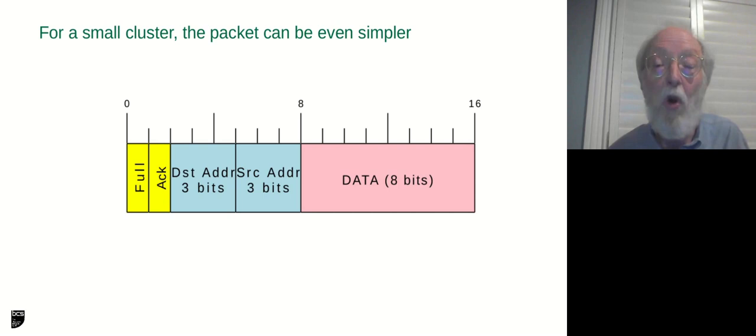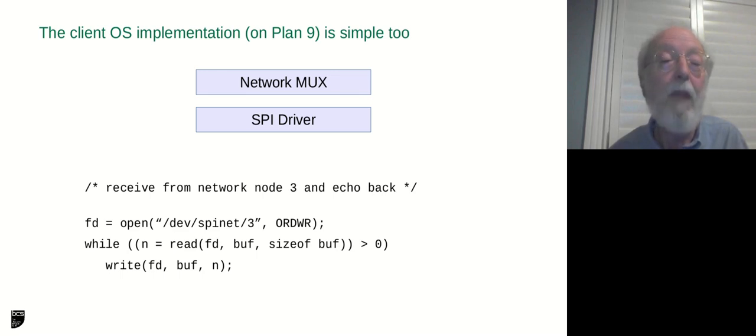Because the cluster is small, and because we can trust our communication to be reliable, we can simplify things even more. We don't need the parity bit. We can have smaller source and destination addresses. And, in fact, for always trying to simplify things, my packets have one byte of data, and one byte of address and control information.